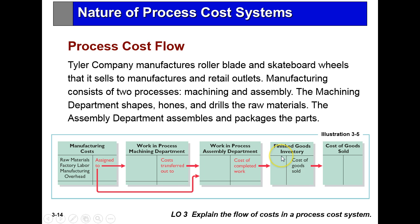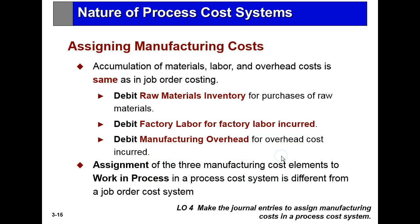This is a little different than what we had in job costing. Assigning manufacturing costs — accumulating the materials, labor, and overhead — is the same as in job order costing in that they go into raw materials inventory, factory labor incurred, or get debited to manufacturing overhead. But assigning these manufacturing costs to work-in-process in a process system is going to be different from what we did in the job order system.